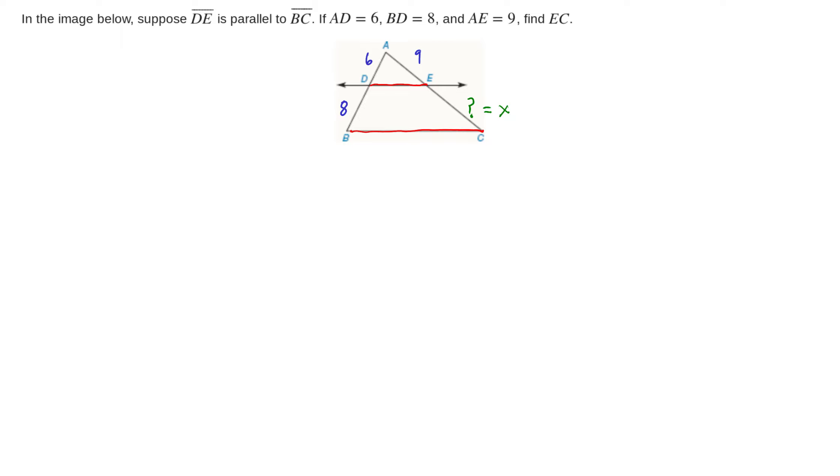What we need to do though is notice that we have some similar triangles. Because these lines are parallel, DE and BC are parallel, then AB, this segment right here, this line right here, this is a transversal to the two parallel lines, and that tells us then that these angles are congruent. These two angles are congruent. This is corresponding angles of a transversal, congruent angles.